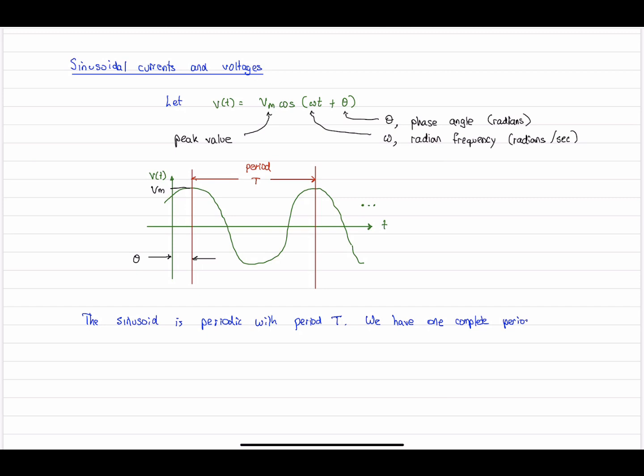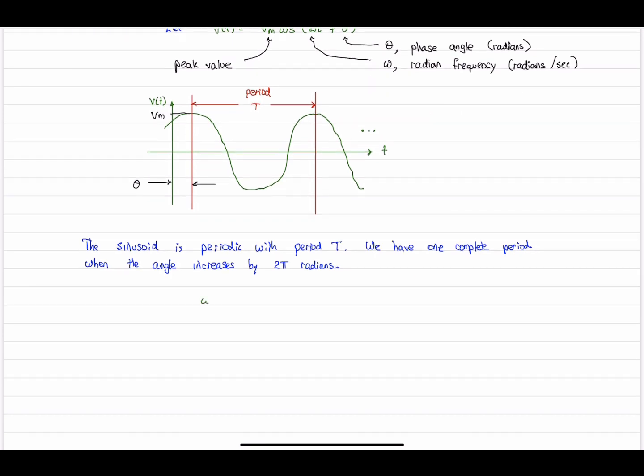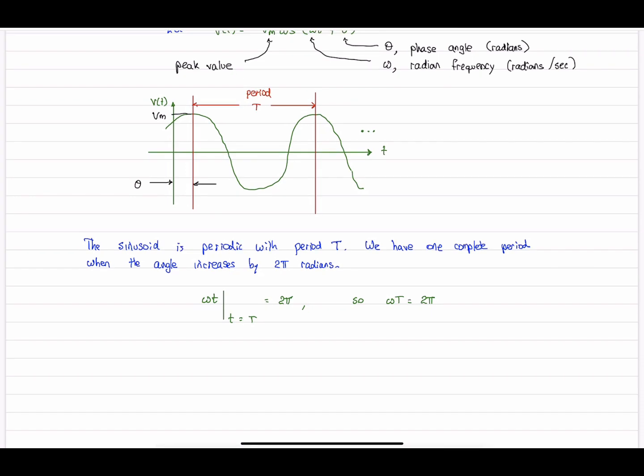So we say that this sinusoid is periodic with period T. And one complete period is over 2π radians. So we can express it this way. Omega T evaluated at one period is 2π. And this gives omega equals 2π over T. And if we turn that around, one period is 2π over omega.